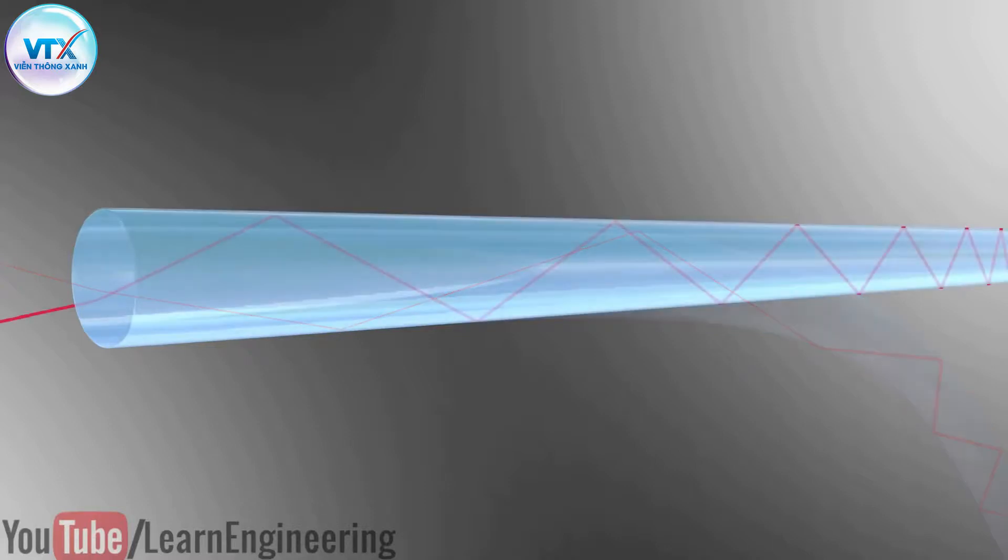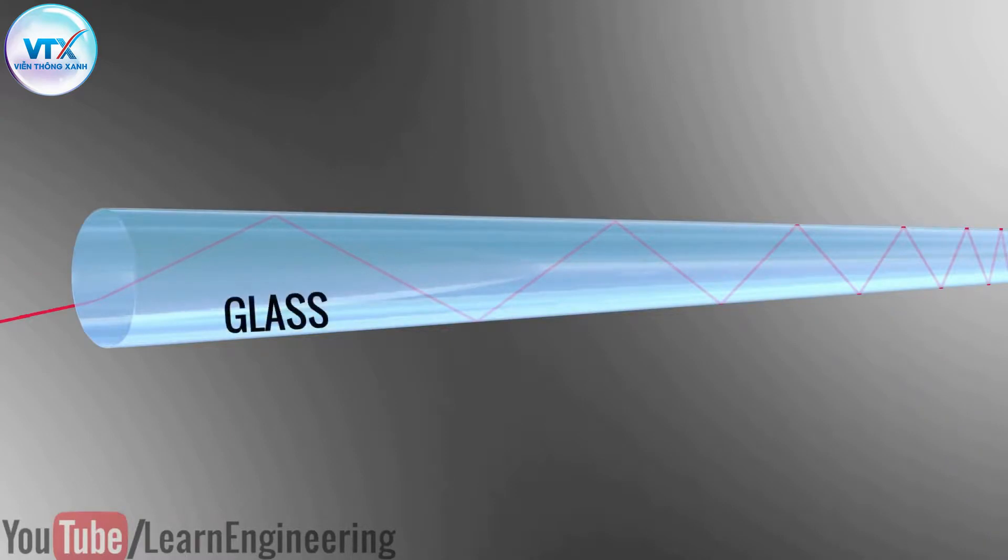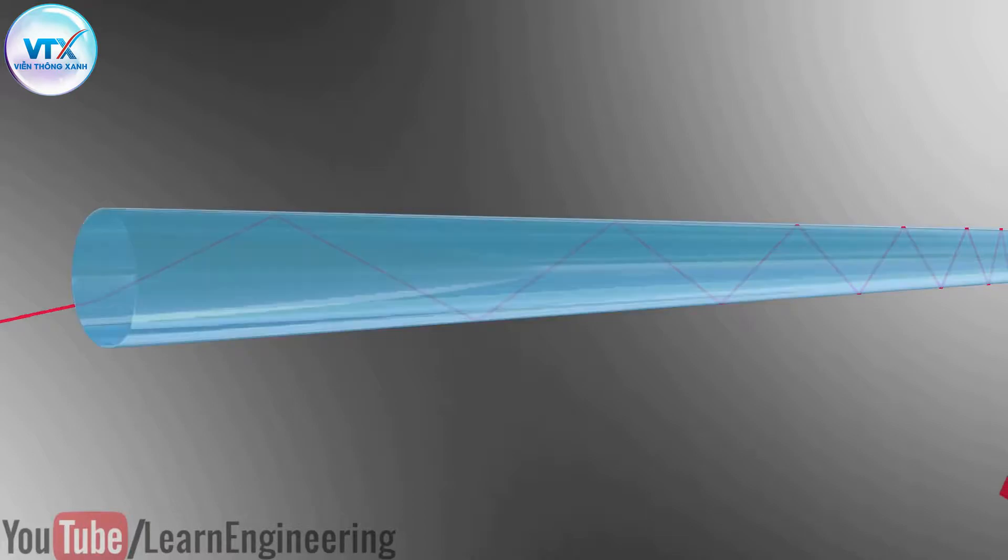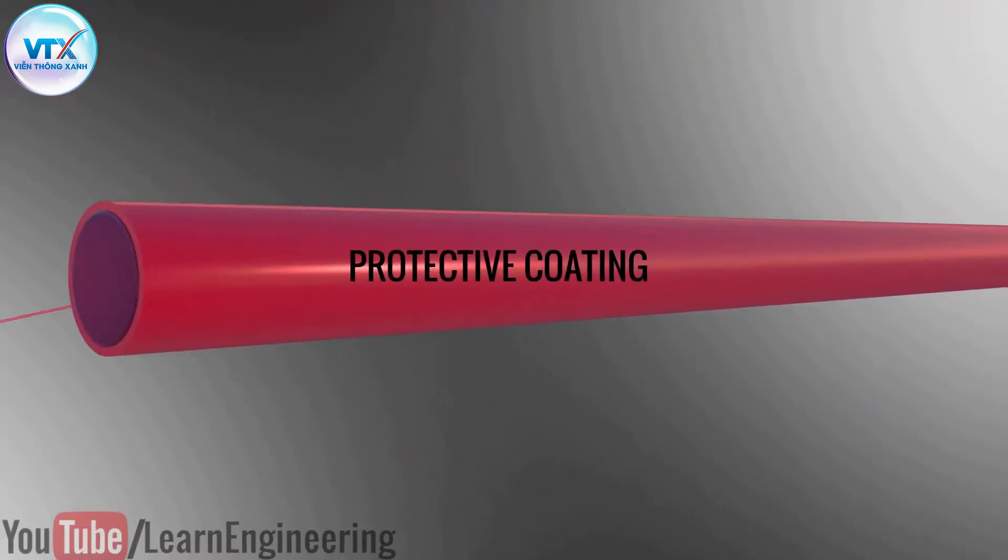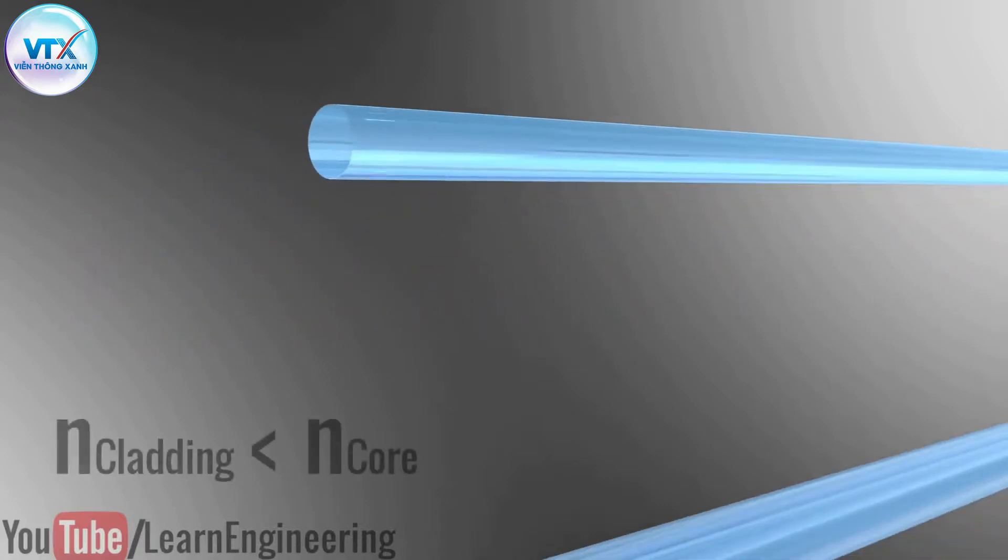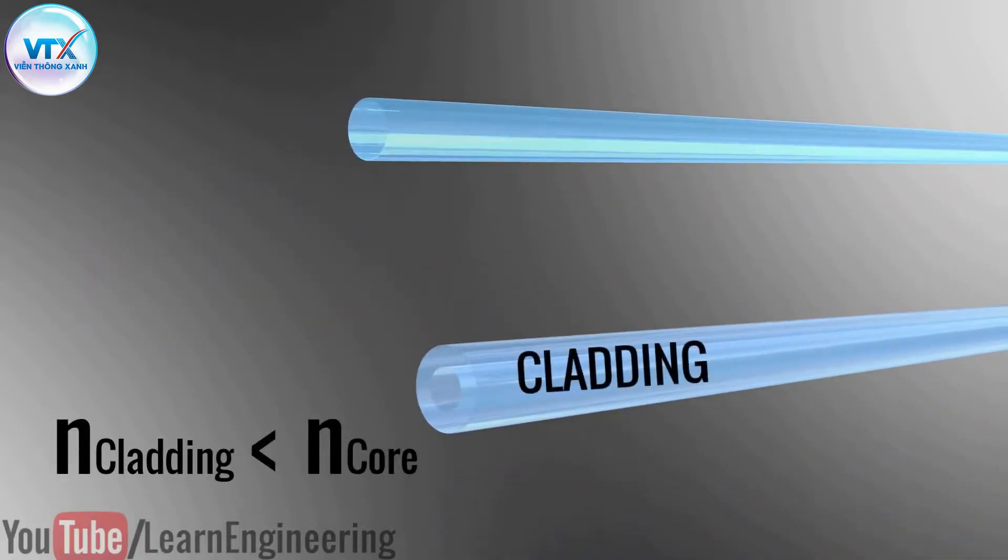Remember total internal reflection happens between the high refractive index glass and the low refractive index air. However optical fibers need a protective coating. A protective coating is not possible with this configuration. The introduction of protective material will replace the position of the air and cease the total internal reflection phenomenon. An easy way to overcome this issue is to introduce a low refractive index glass above the core glass known as cladding.